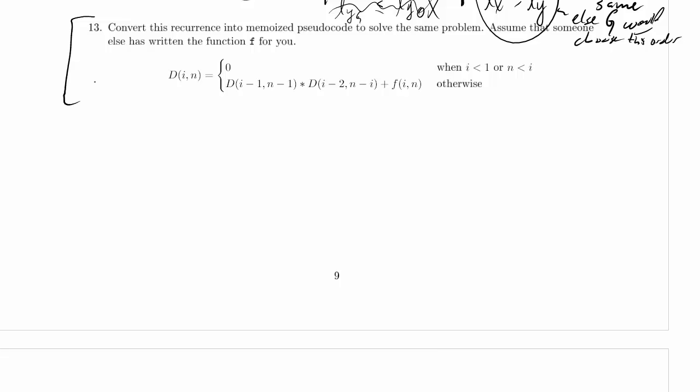Now notice, by the way, all we're given is this recurrence right here, so what does it mean to solve the problem? It depends on what the recurrence is actually modeling. But we'll assume that all we want to do is compute the value of the recurrence for a given i and n, because we can't do anything else. We don't know anything else about the domain of the problem.